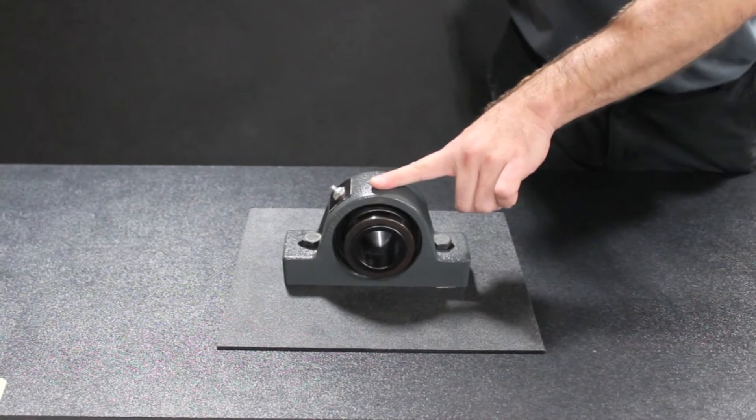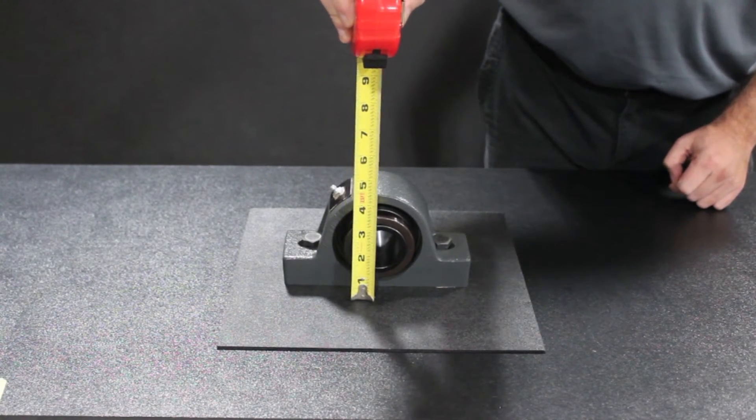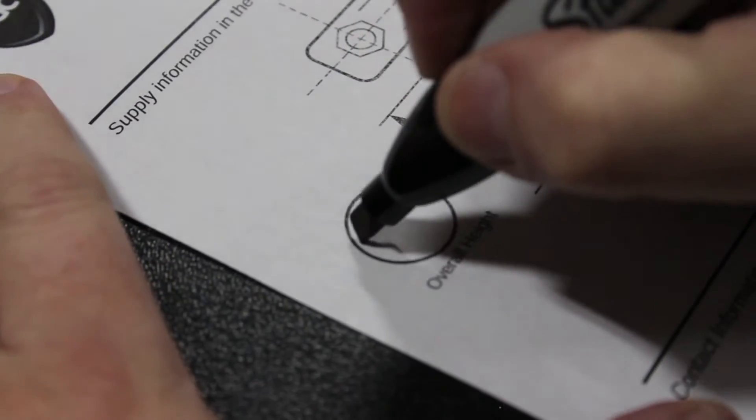Next, we need the overall height of your bearing. This is found when measuring from the mounting face of the bearing directly up to its highest elevation.